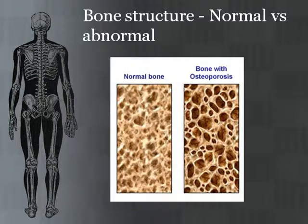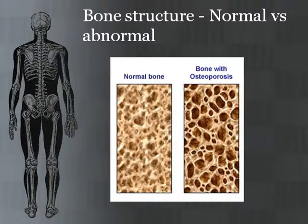So this is what happens in osteoporosis: the internal structure becomes hollow with thinner walls and a weaker structure, leading to easy fractures.